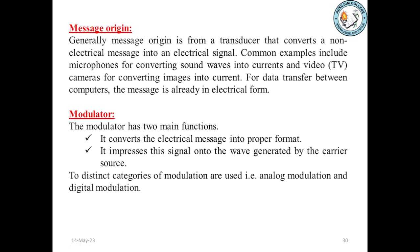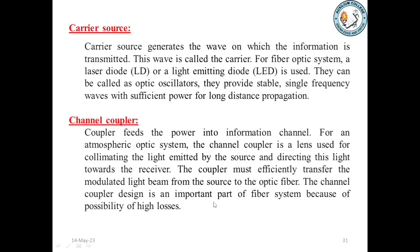Carrier source generates the wave on which the information is transmitted — this wave is called the carrier. For fiber optic systems, a laser diode or a light emitting diode is used, also called optic oscillators. They provide stable single-frequency waves with sufficient power for long-distance propagation. Channel coupler feeds the power into the information channel. For an atmospheric optic system, the channel coupler is a lens used for collimating the light emitted by the source and directing it towards the receiver. The coupler must efficiently transfer the modulated light beam from the source to the optic fiber. Channel coupler design is an important part of fiber optic systems because of the possibility of high losses.